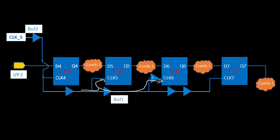The second option is, instead of removing that buffer, you add one buffer here on the clock 5 path — say 1 nanosecond — so the difference also goes from 2 nanoseconds to 1 nanosecond. That achieves the same result. The third option is you don't add anything here and don't remove the first buffer, but instead remove this other particular buffer. So you have three options: remove the first buffer, add a buffer on the other side, or remove a different buffer.